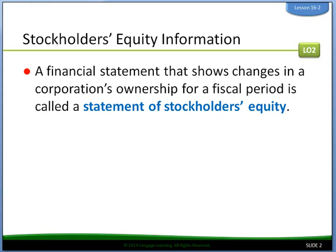The information to prepare a statement of stockholders equity is obtained from several sources. The current year's income statement summarizes the change in retained earnings from the operation of the business. The general ledger provides the beginning balance and activity in the capital stock account.